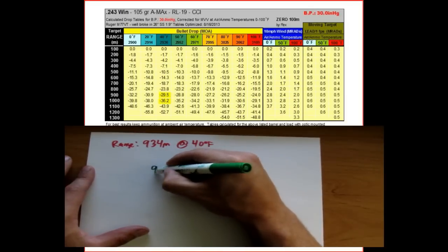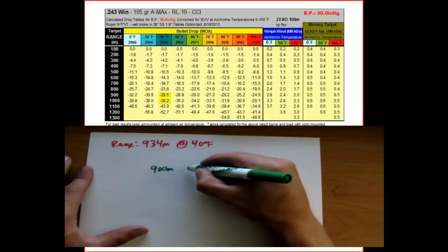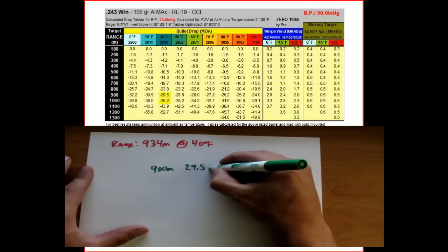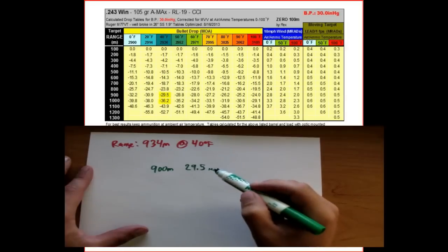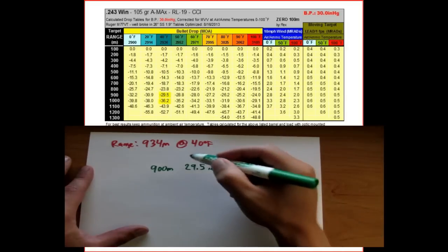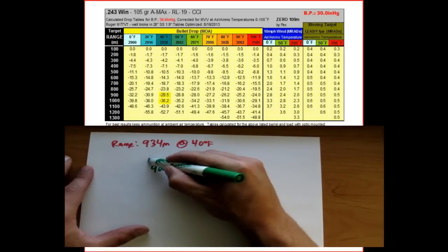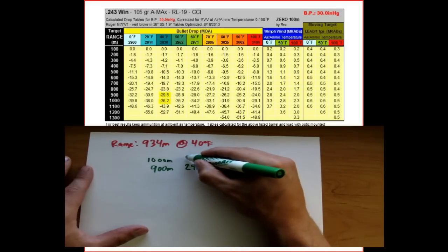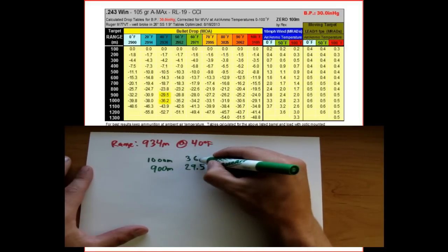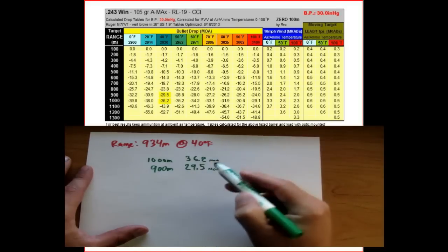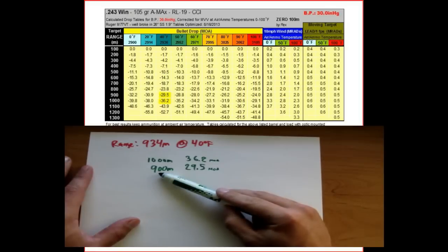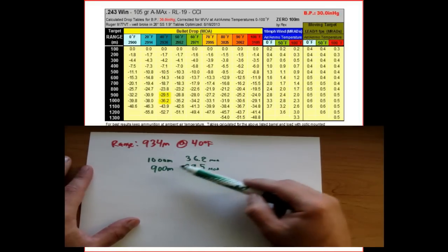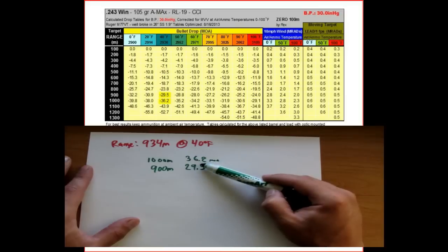At 900 meters, the drop is 29.5 minutes of angle according to our tables. The next reference point above is at 1,000 meters, where the drop is 36.2 minutes of angle. So if we want the 934 data, we don't have it directly, but we can interpolate between these two to figure out what it's going to be.